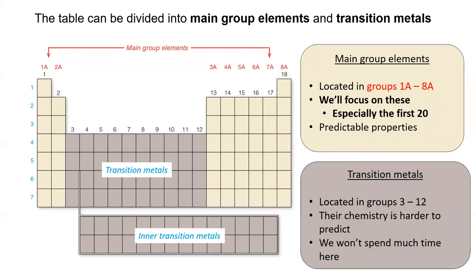The transition metals make up the inside of the periodic table, and their properties are all over the place. Don't worry too much about these elements.